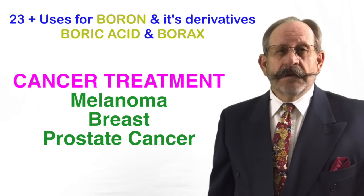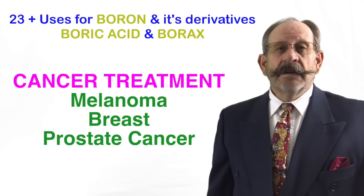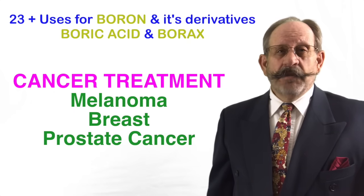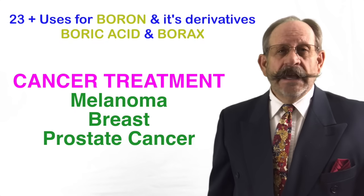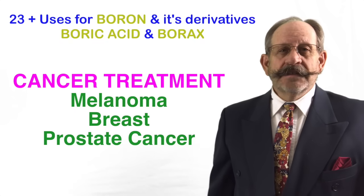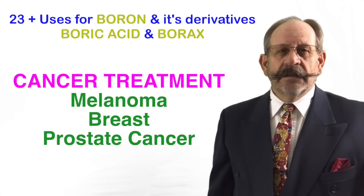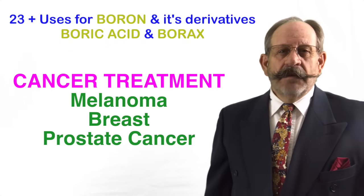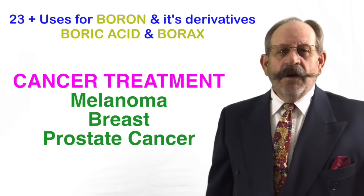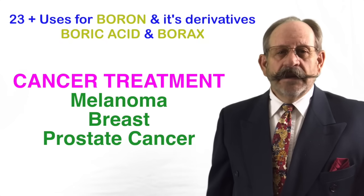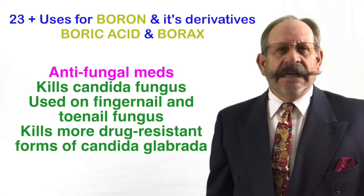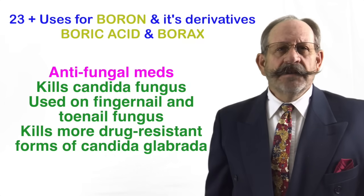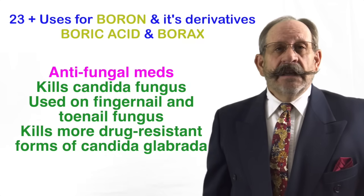Melanoma, breast, and prostate cancer studies have shown that boric acid can cause cancer cell apoptosis and prevent tumor growth. Apoptosis is a process by which abnormal cells are killed by the body, and cancer cells are typically immune to apoptosis — but recent studies are showing that boric acid opens certain cancers to apoptosis. Number five: antifungal meds. It kills candida fungus and is used on fingernail and toenail fungus. It also kills more drug-resistant forms of the candida glabrata fungus.